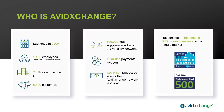We have over 5,500 customers using our products. As far as our network, we do have the largest payment network in the country for midsize companies. We have over 600,000 vendors that make up the Avid Pay network. Last year, we processed over 12 million payments through our Avid Pay network, totaling around 120 billion dollars. We are on the Forbes top 100 cloud companies at number 38, and we've also received recognition from Deloitte as a fastest growing technology company in the top 500.